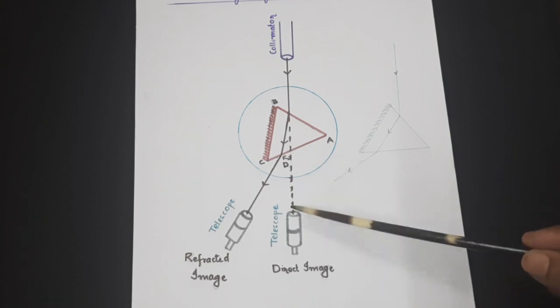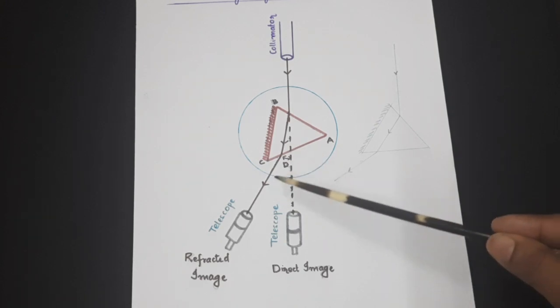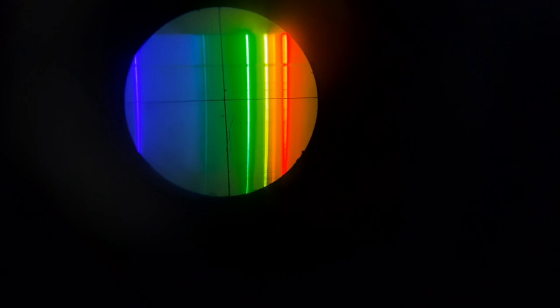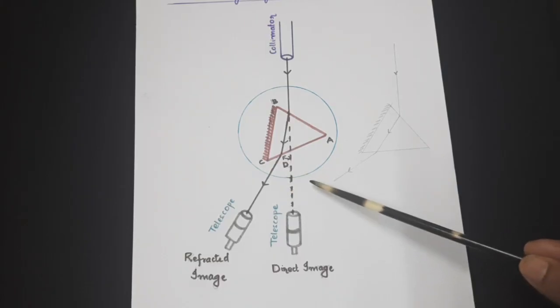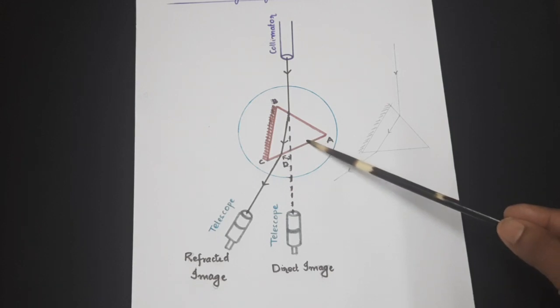Along with this, we can see that the various component wavelengths split up into individual components here. This is due to the fact that the refractive index and in fact the velocity of various wavelengths are different as far as this prism is concerned.